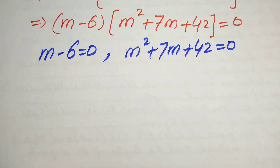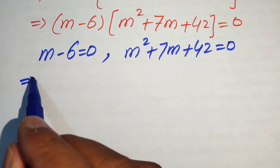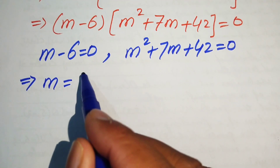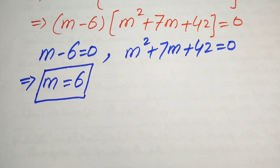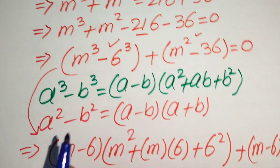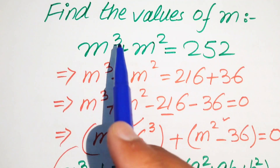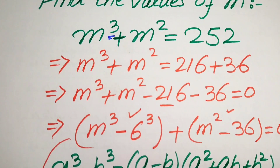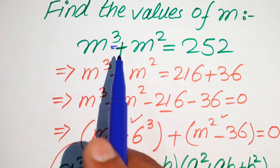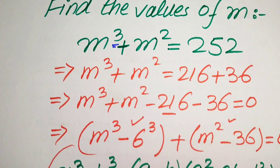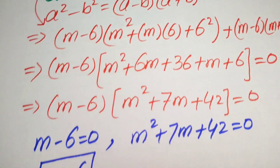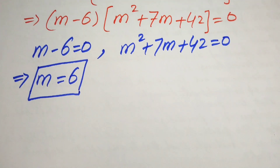From the first case, m − 6 = 0, we easily get m = 6, which is the first real root of the equation. Since the original equation has degree 3, there are three roots in total, and we now find all three.